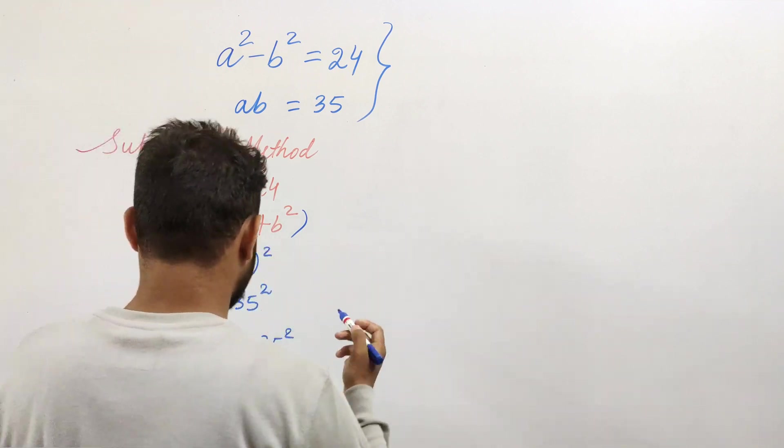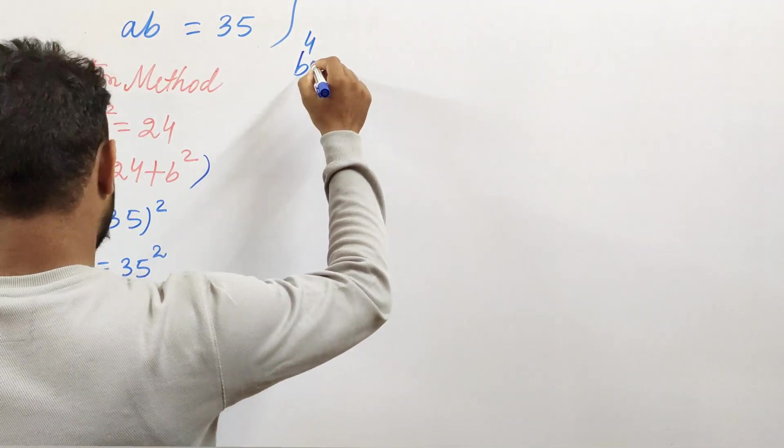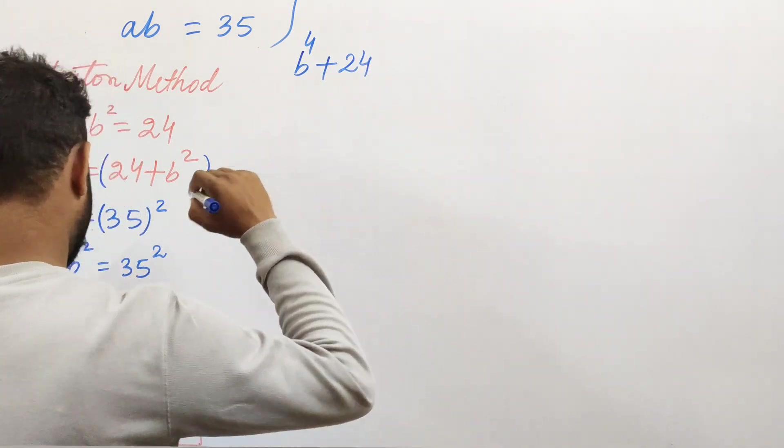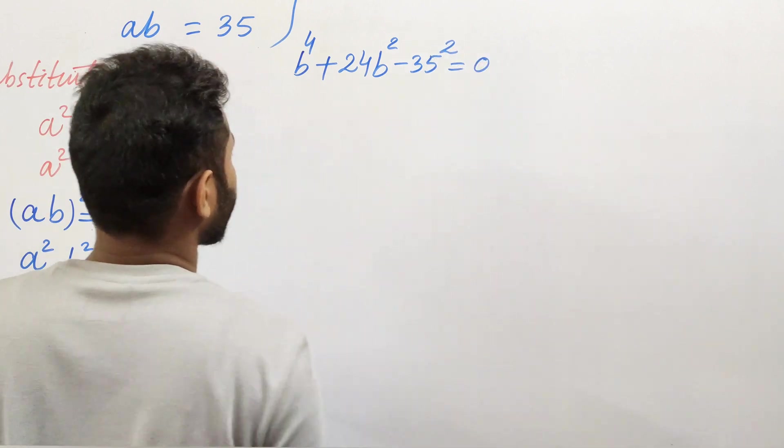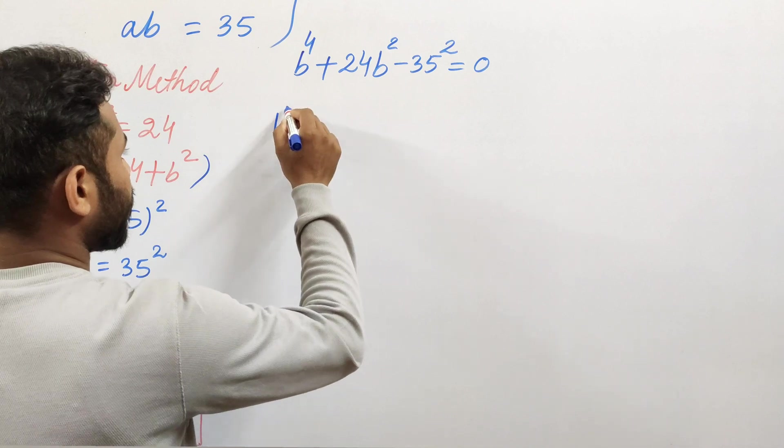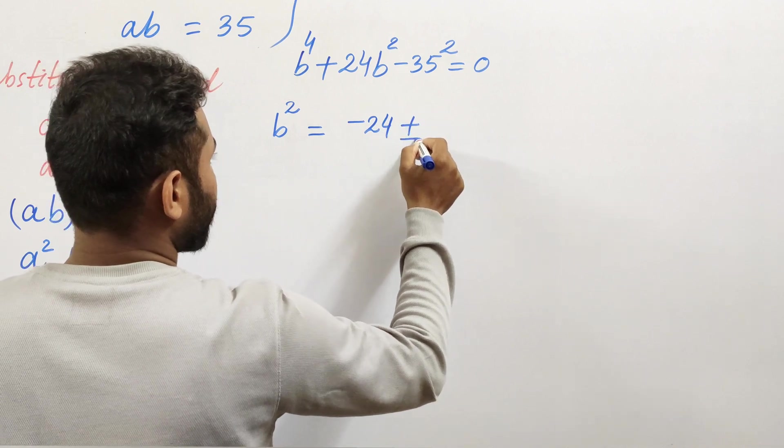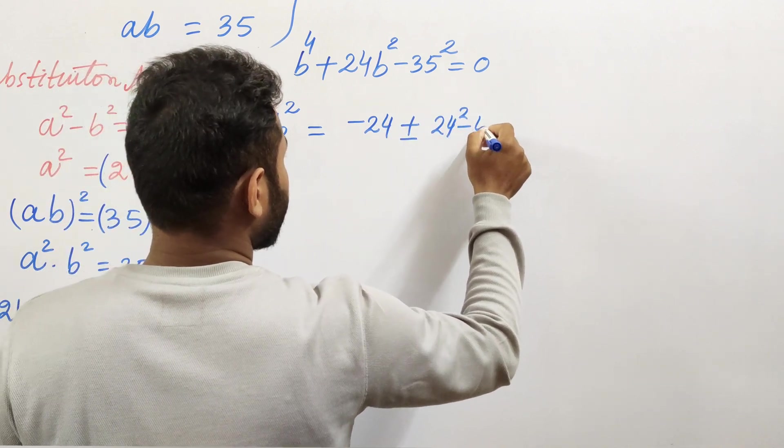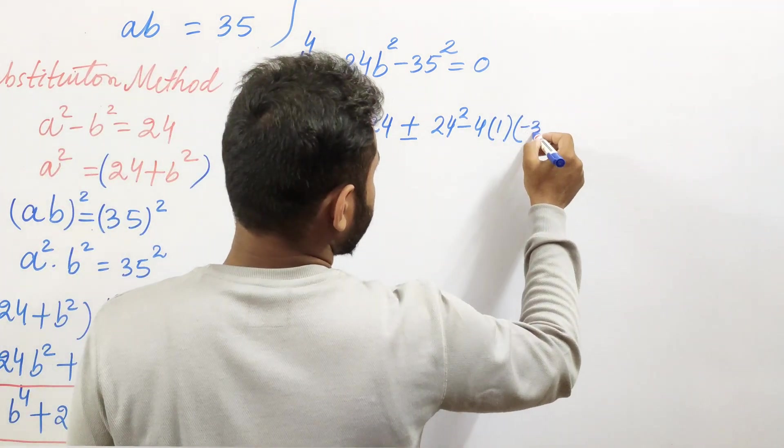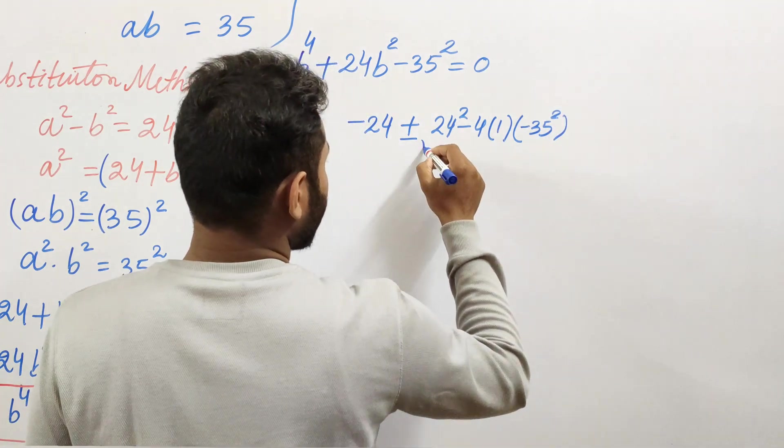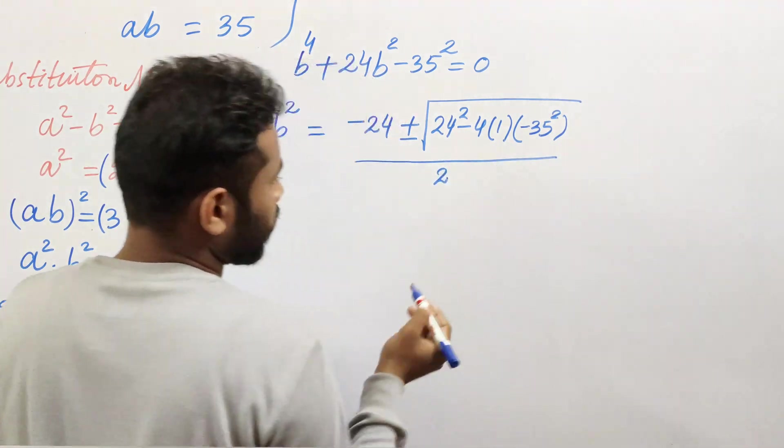Let's solve this quadratic equation, b⁴ + 24b² - 35² = 0. Treating this as a quadratic equation, the value of b² will be: b² = [-24 ± √(24² - 4(1)(-35²))] / 2(1). The coefficient a is 1 here.